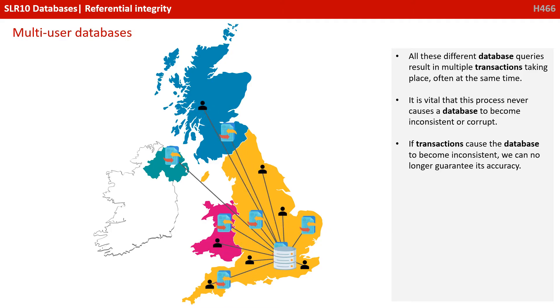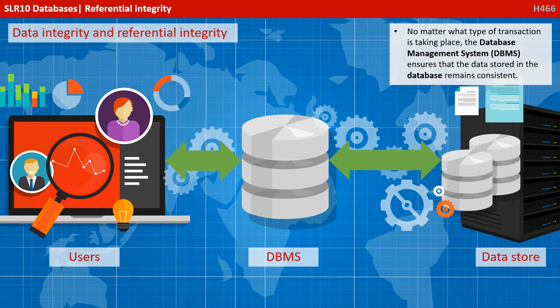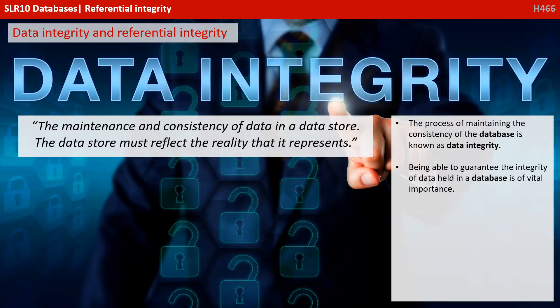It is vital that this process never causes a database to become inconsistent or corrupt. If transactions cause the database to become inconsistent, we can no longer guarantee its accuracy. No matter what type of transaction is taking place, the database management system ensures that the data stored in the database remains consistent. The process of maintaining the consistency of the database is known as data integrity. Data integrity is the maintenance and consistency of data in a data store, and the data store must reflect the reality that it represents. Being able to guarantee the integrity of data held in a database is of vital importance.